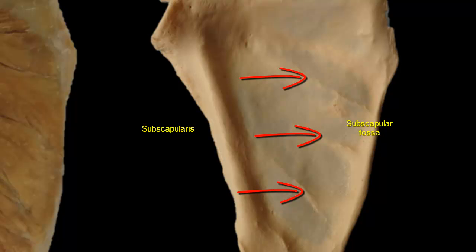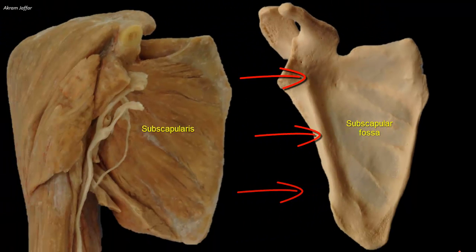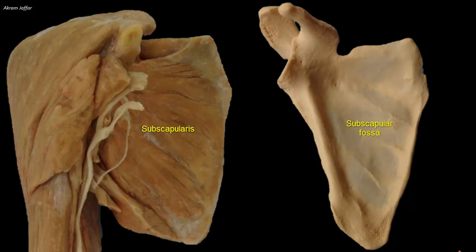From these fibrous septa, the multipinnate fibers of the subscapularis muscle arise. Here are the multipinnate fibers of the subscapularis muscle.